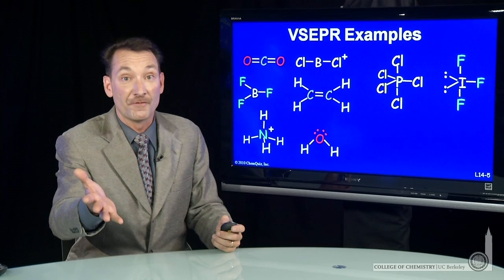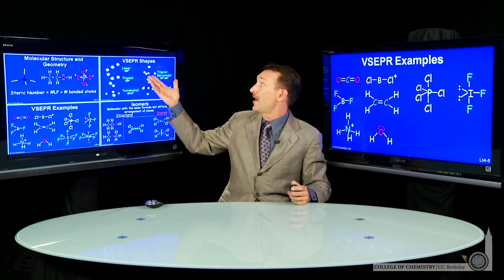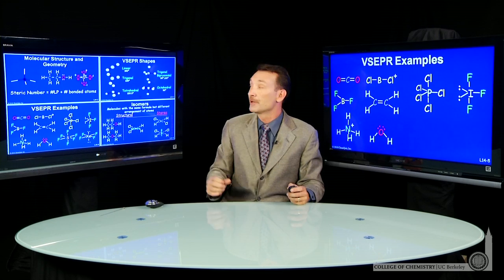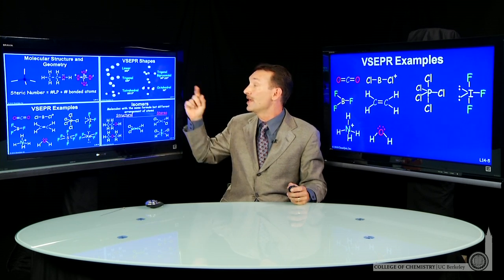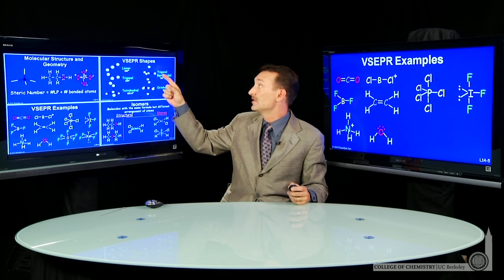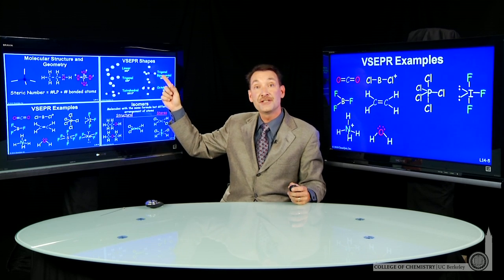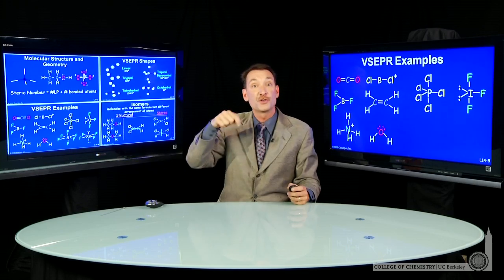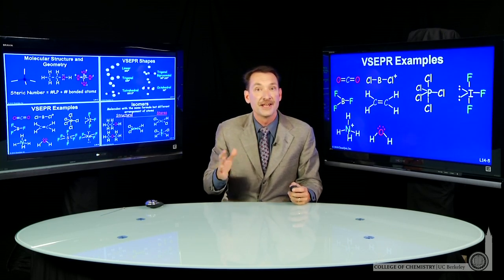We can go to steric number five. If we go to steric number five, trigonal bipyramidal molecule is the name of the VSEPR shape with two bond angles to account for, 90 degrees and 120 degrees, two different positions. The axial positions, 180 degrees from each other, and the equatorial positions, 120 degrees from each other.